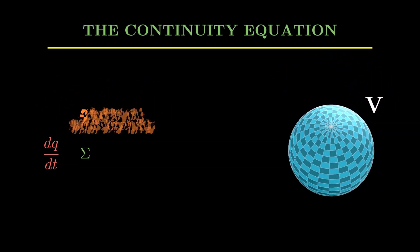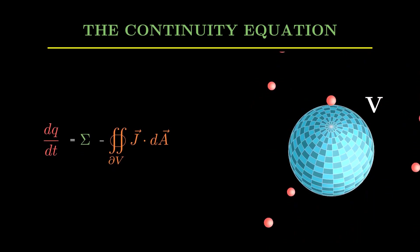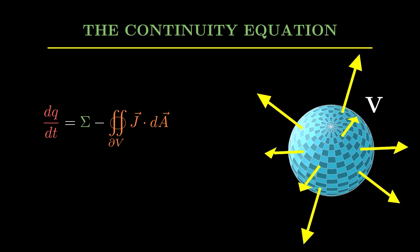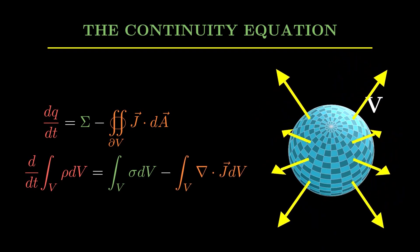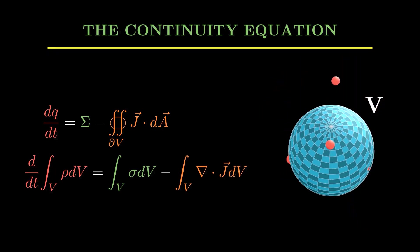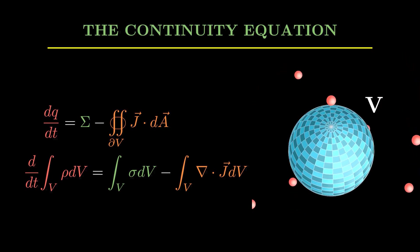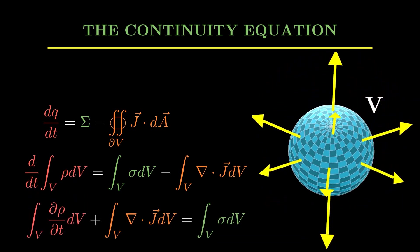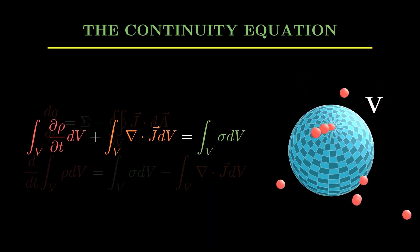This is represented by this beautiful equation. Now in terms of continuous variables where we include some densities, this ρ is the quantity density and this small σ is the rate of production per unit volume. Using the Feynman rule of integration and some divergence theorem, we get this beautiful equation.